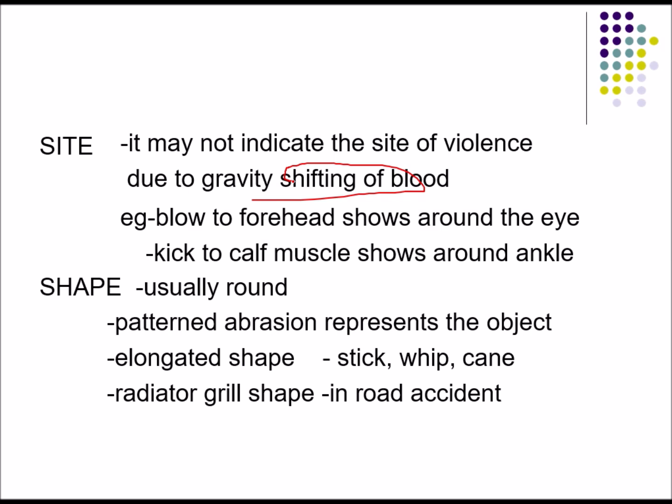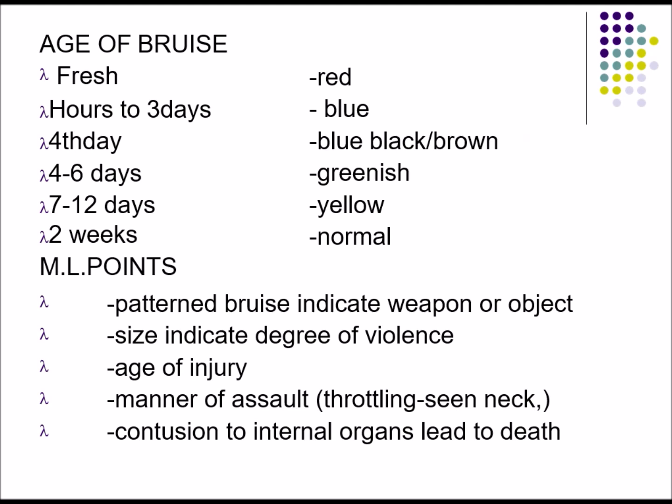The shape is usually round, but pattern bruises represent the object — for example, an elongated shape is seen with a stick, whip, or cane, and a radiator grill shape in road traffic accidents. However, bruises enlarge over time, which may lead to misinterpretation. Medico-legally, abrasions are more important than contusions because abrasions can tell the pattern and weapon with greater accuracy.